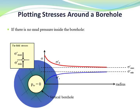If we draw the principal stresses sigma-r and sigma-theta around a borehole, in the case of no pressure inside the borehole — such as mud pressure or any supporting pressure — sigma-r is approximately zero and sigma-theta is maximum at the borehole wall. As we move away from the borehole, sigma-r increases and sigma-theta decreases. The difference between these stresses far from the borehole is related to the difference between the in-situ principal stresses sigma h-max and sigma h-min.